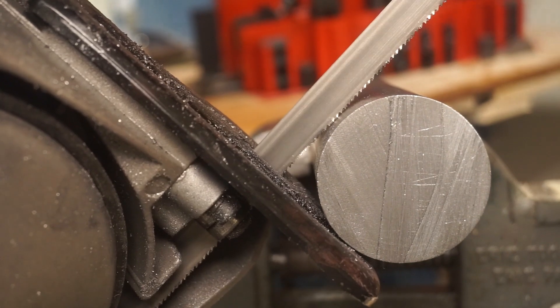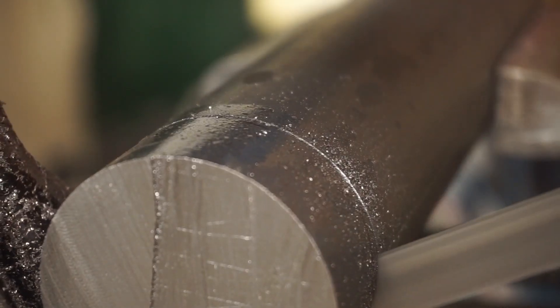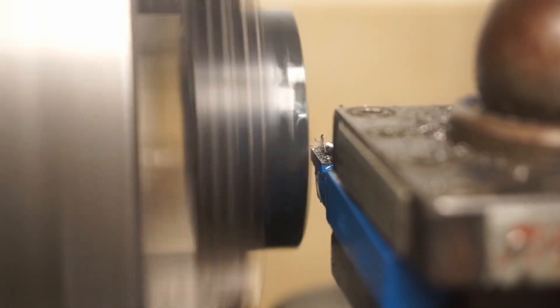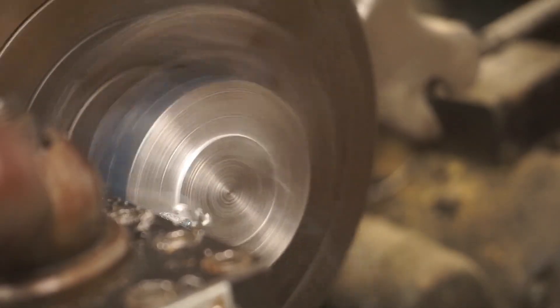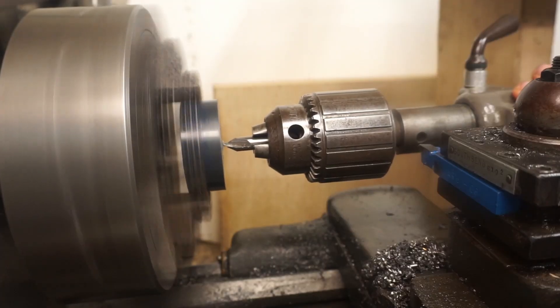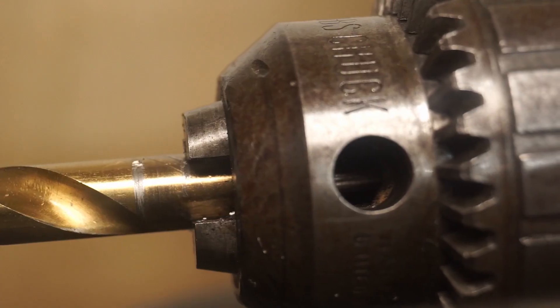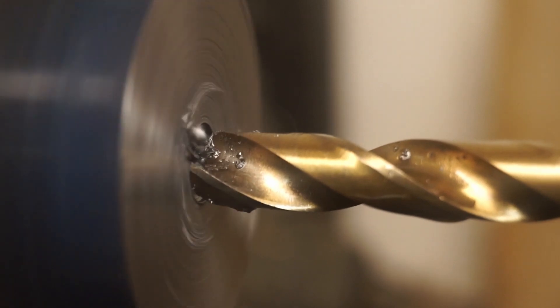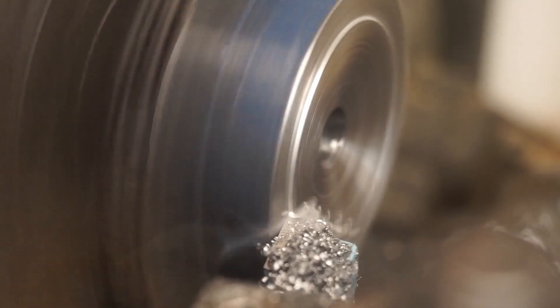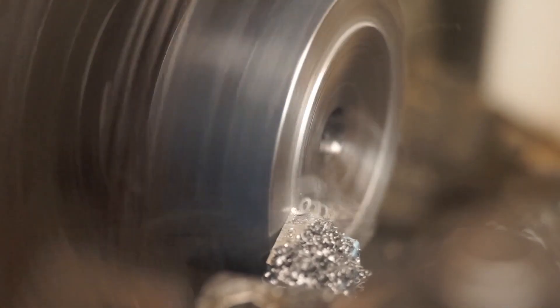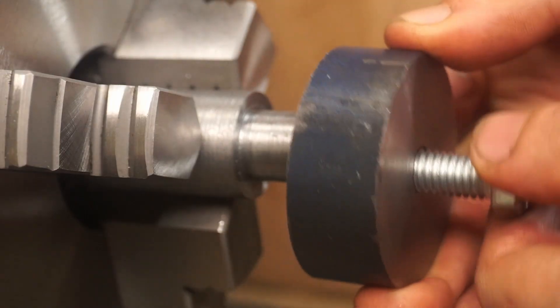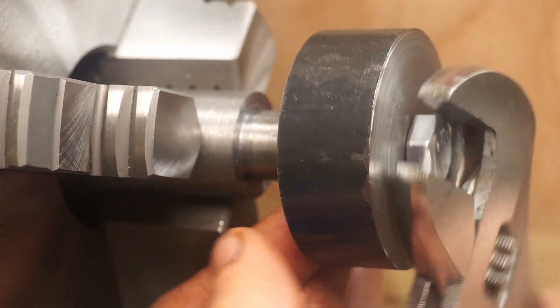Now, I need to make the piece that I'll use to anchor the gear to the arbor. Again, just like the arbor, I'm going to put a taper on the inner face of this piece. And this is how it fits. The gear blank will be clamped in between these two pieces.